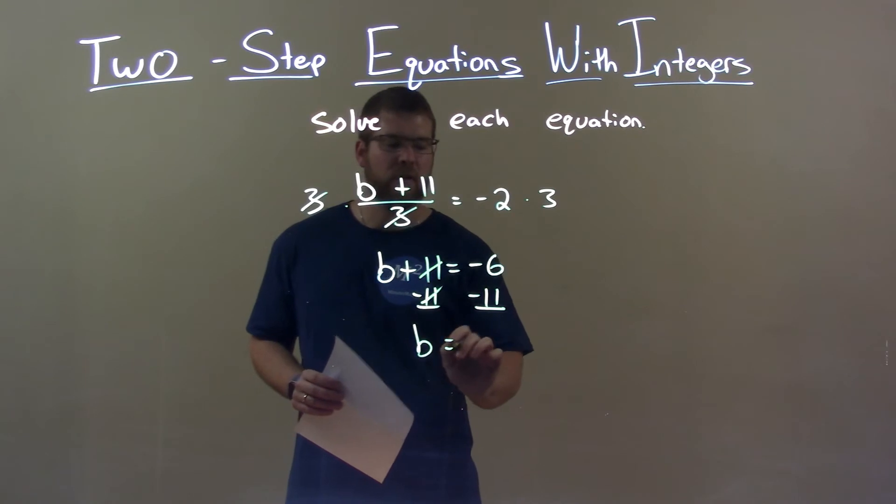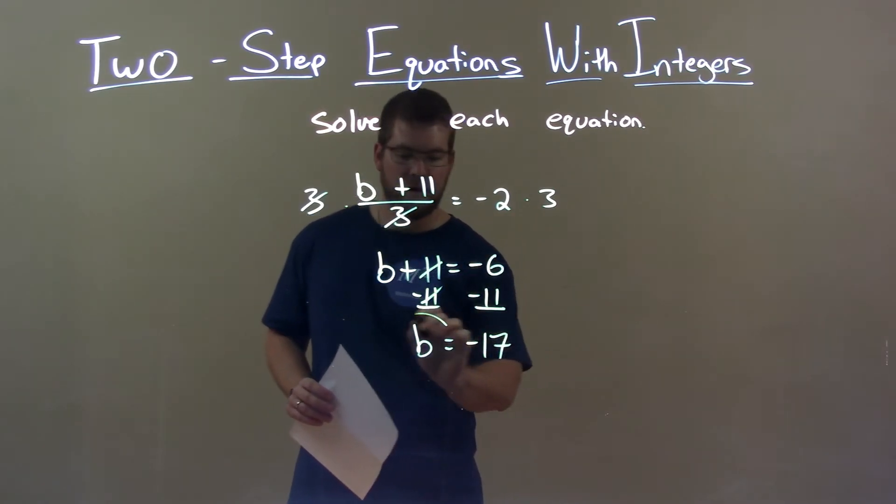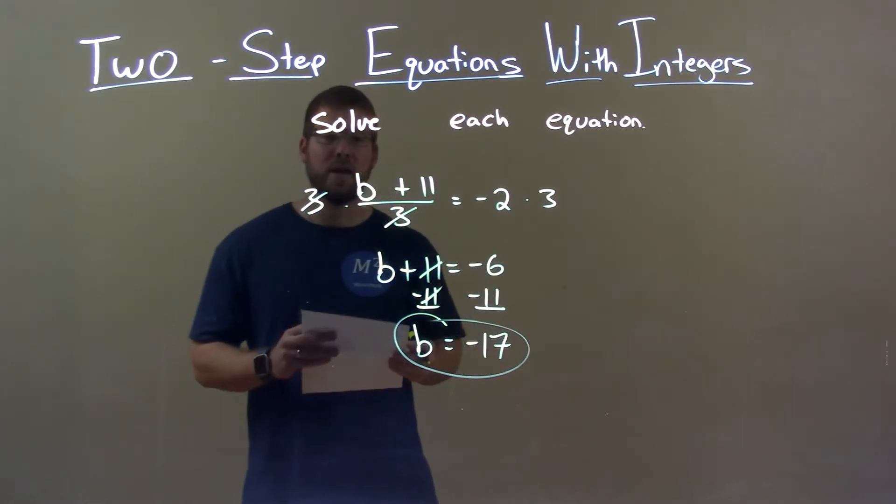The 11's cancel, giving me b by itself on the left. Negative 6 minus 11 is negative 17. So our final answer is b equals negative 17.